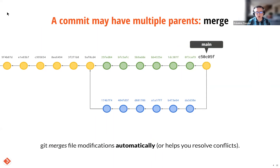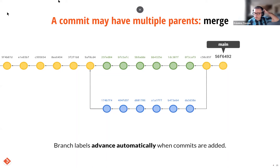When the feature is ready, you can merge it into the main branch of the project. A merge is simply a commit which has more than one parent. In the vast majority of cases, especially if you work with plain text documents, Git can automatically merge each file by integrating the changes from all parents automatically. This alone might save hours of tedious and error-prone work. Strictly speaking in Git, branches are just mnemonic labels so you don't have to remember these random hash values. Labels that advance automatically. It's certainly easier to speak of the main branch rather than commit 56F6492.